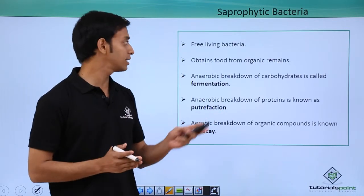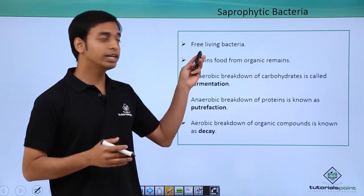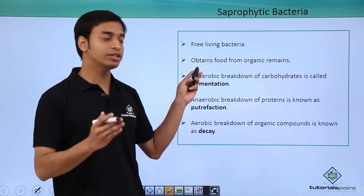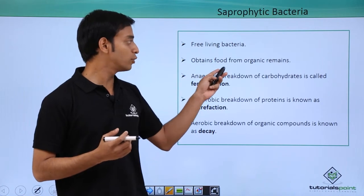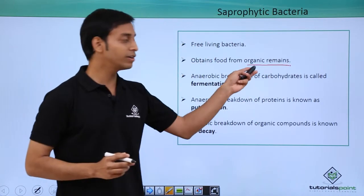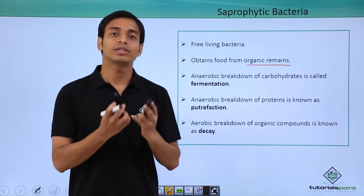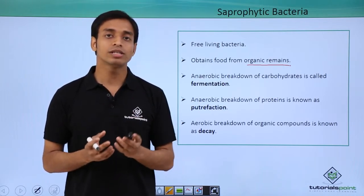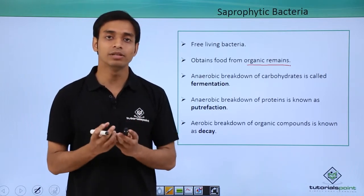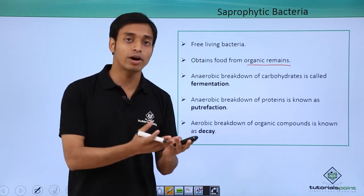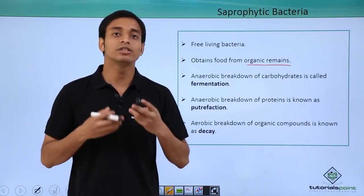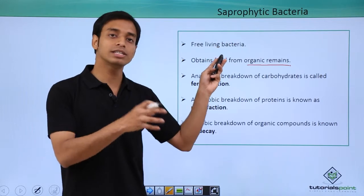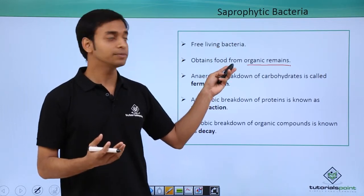Saprophytic bacteria are basically free-living bacteria. In nature, they are the free-living type of bacteria which obtain their food from organic remains. This is very important — they take their food from the dead remaining parts of plants and animals. For example, they use dead parts of plants and animals, and different carbohydrate sources like rice, jams, and jellies. These saprophytic bacteria use rotten materials as a source of energy.